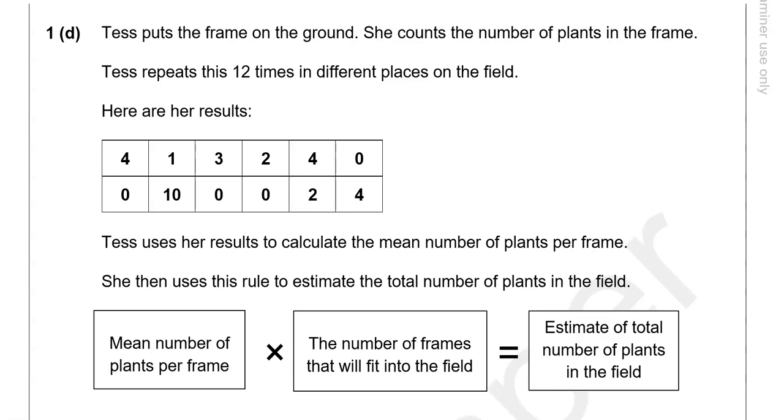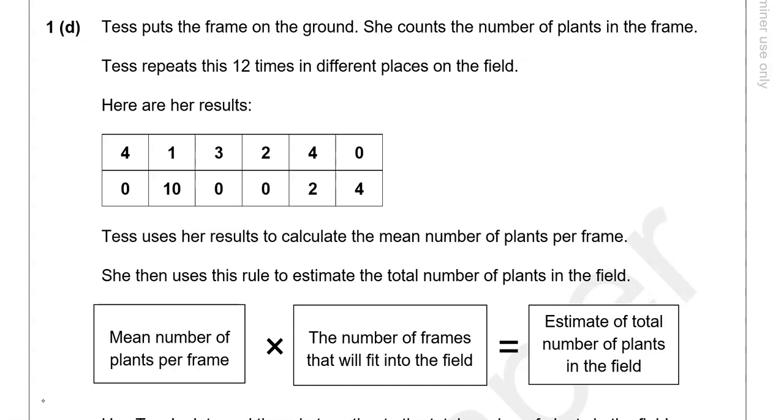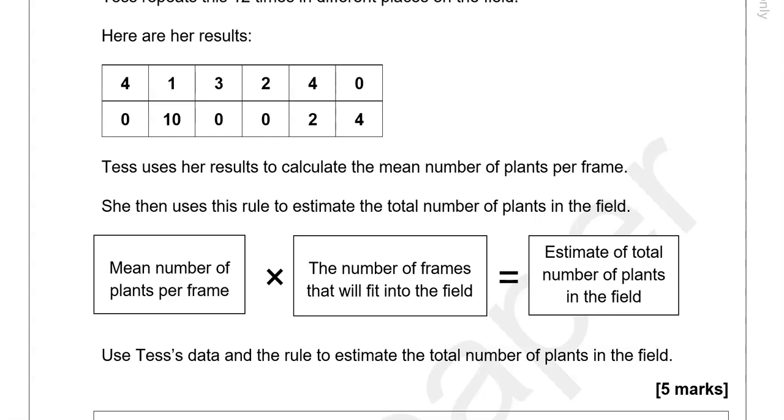Tess puts the frame on the ground. She counts the number of plants in the frame. Tess repeats this 12 times in different places on the field. Here are her results. Tess uses her results to calculate the mean number of plants per frame. She then uses this rule to estimate the total number of plants in the field: mean number of plants per frame multiplied by the number of frames that will fit into the field gives us an estimate of total number of plants in the field. Use Tess's data and the rule to estimate the total number of plants in the field.